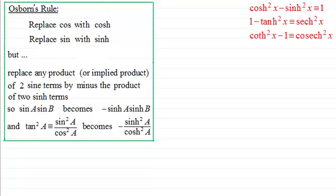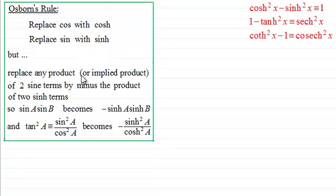It's called Osborne's rule. That rule says that if we've got a trigonometric identity, all we need to do is replace any cosine — cos if you like — with cosh, and also to replace sine with sinh. But we've got to be careful: we've got to replace any product or implied product of two sine terms by minus the product of two sinh terms.